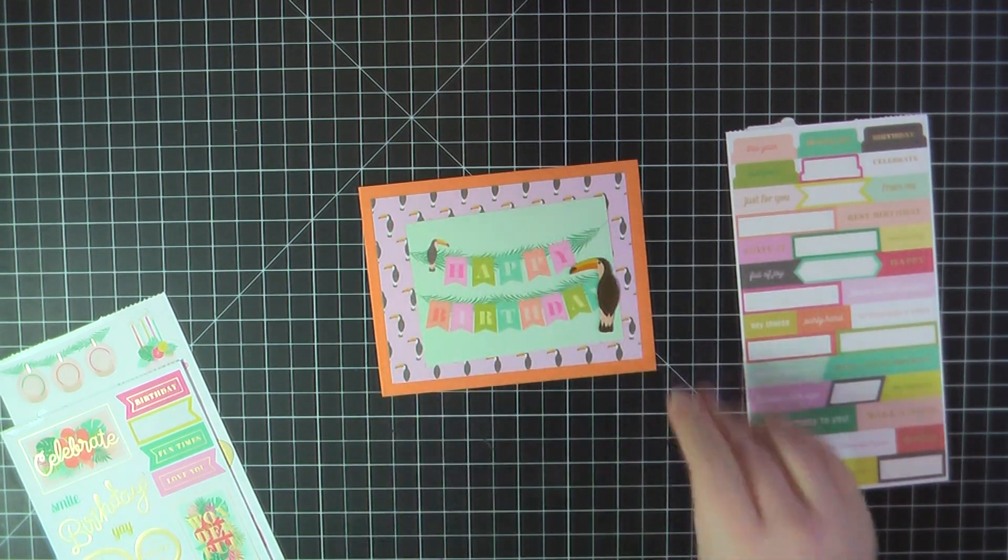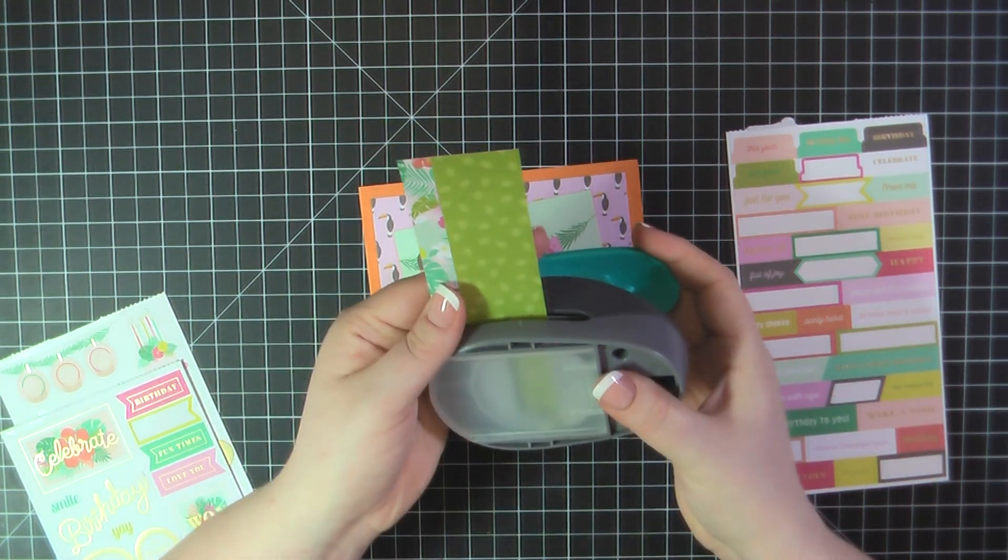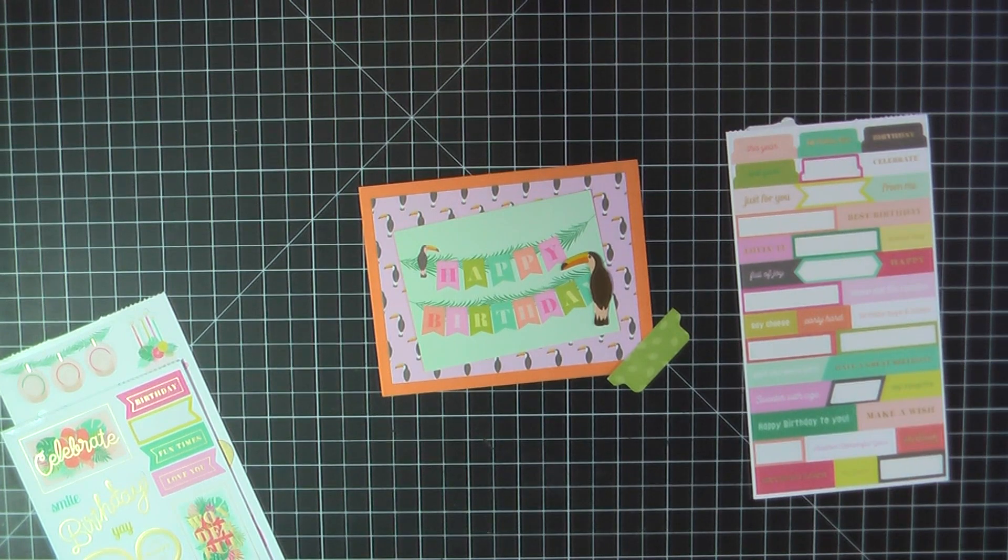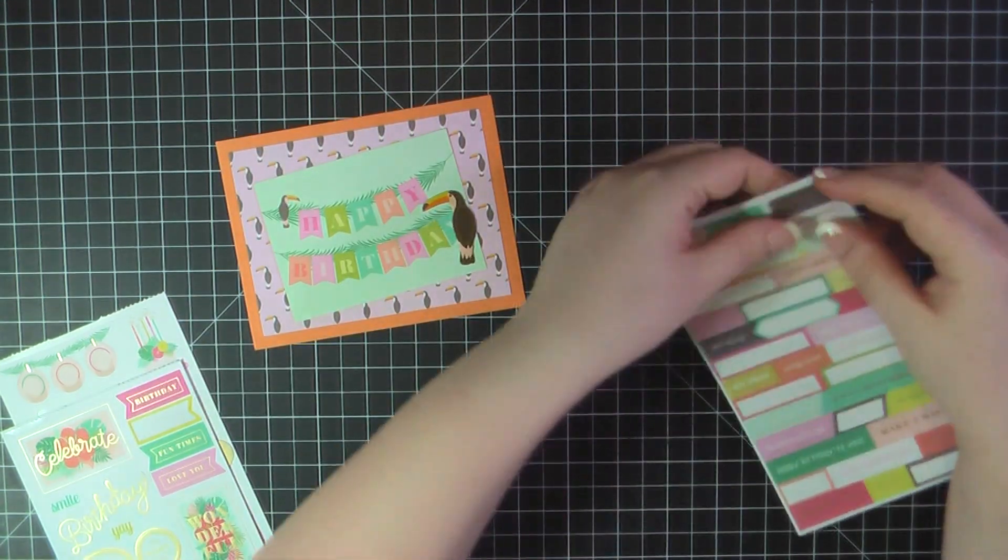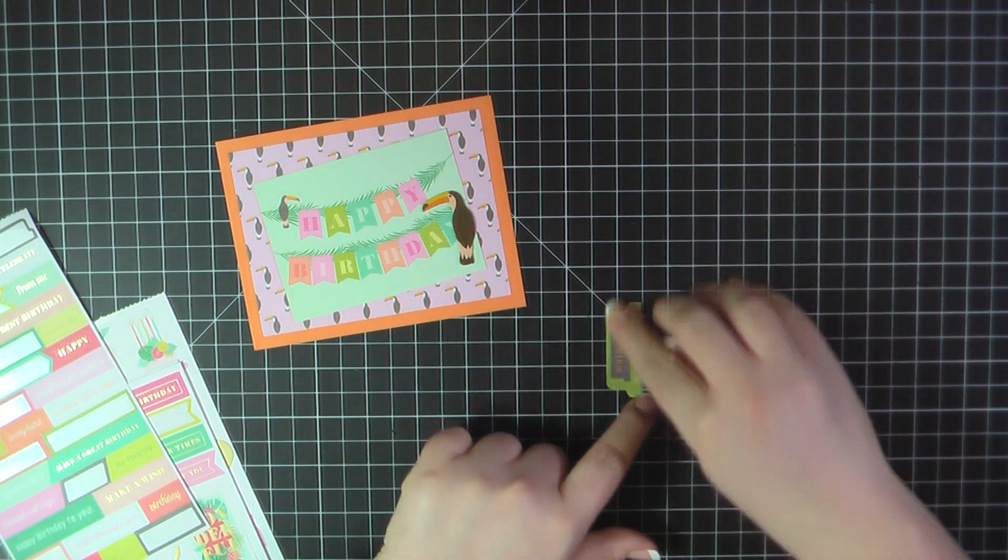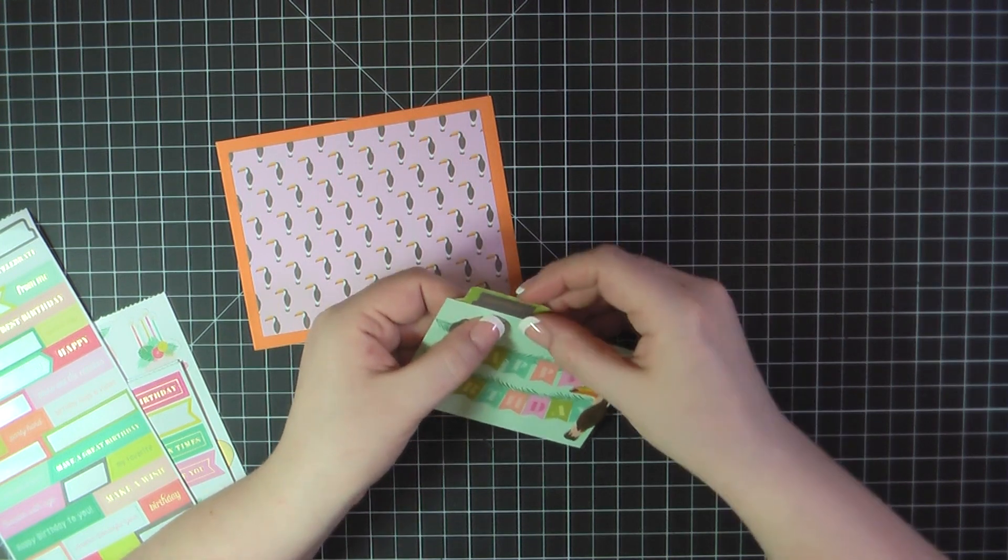So I've started out here on card number one and I'm using this really pretty, I think it's a pelican or no, maybe it's a toucan bird that is on the pink pattern paper. And I trimmed that out using my Blueprints 32 frame die. I went ahead, added some ATG to the back of that and placed that on top of my card base. That card base is made from MFT's Orange Fizz cardstock.